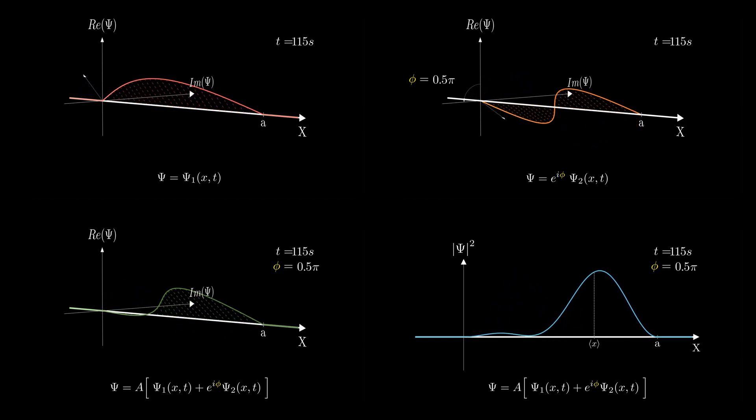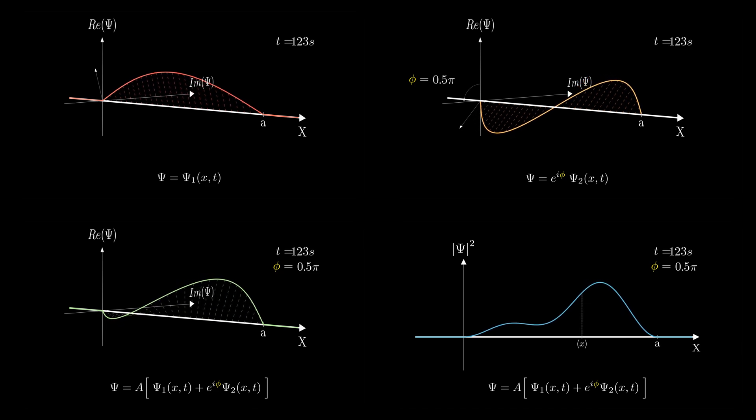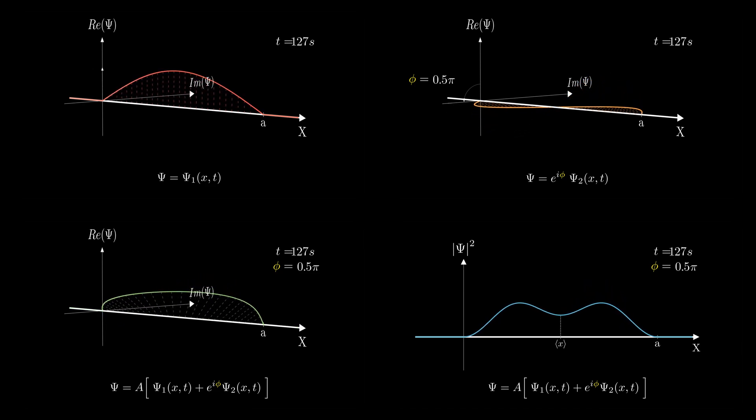To recap, we've seen how introducing a relative phase phi between the two stationary states can influence the interference pattern and the expectation value of position. Next, we'll dive deeper by finding the time-dependent wave function ψ(x, t), the probability density, and the expectation value of position. This will give us a clearer understanding of how phi affects the system's evolution and measurable properties.